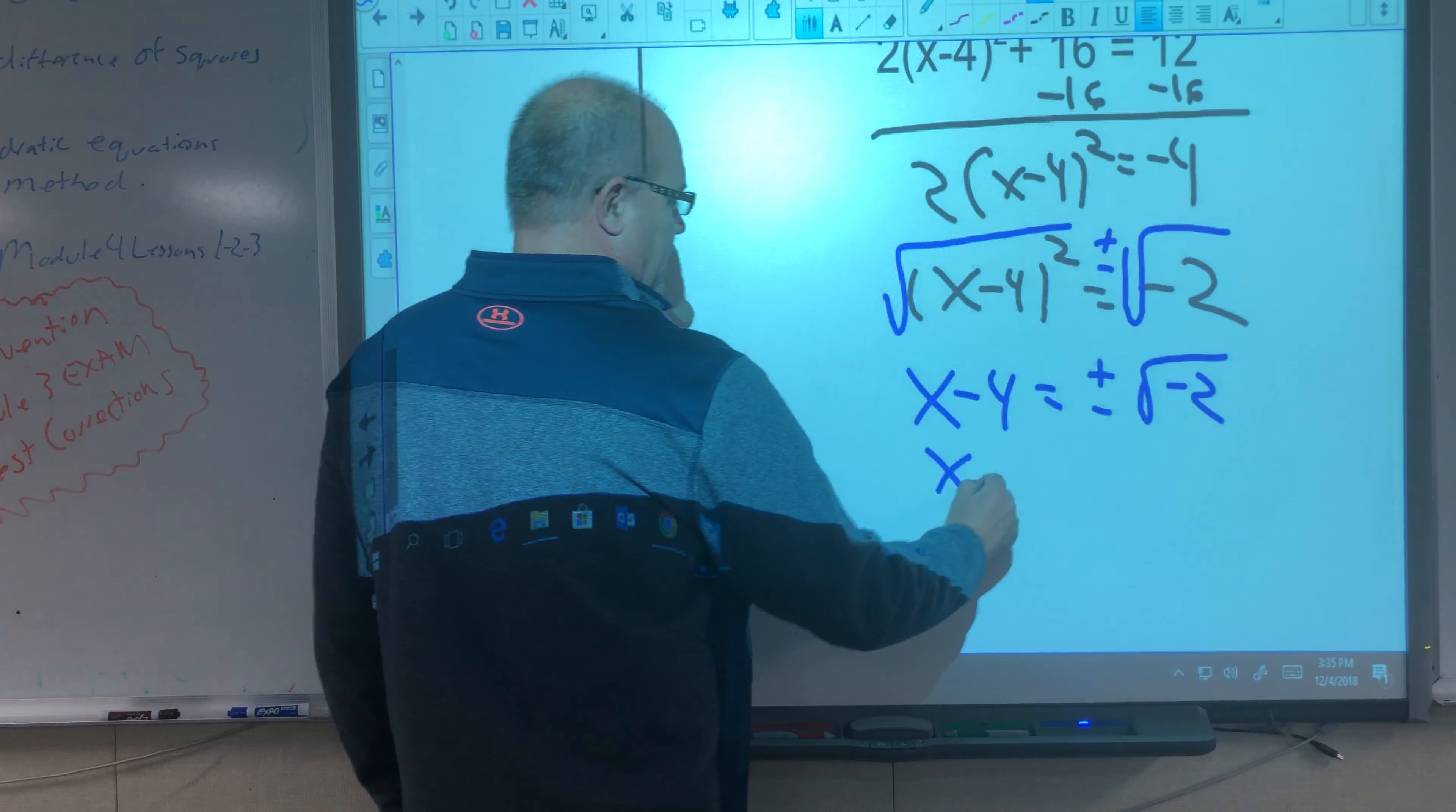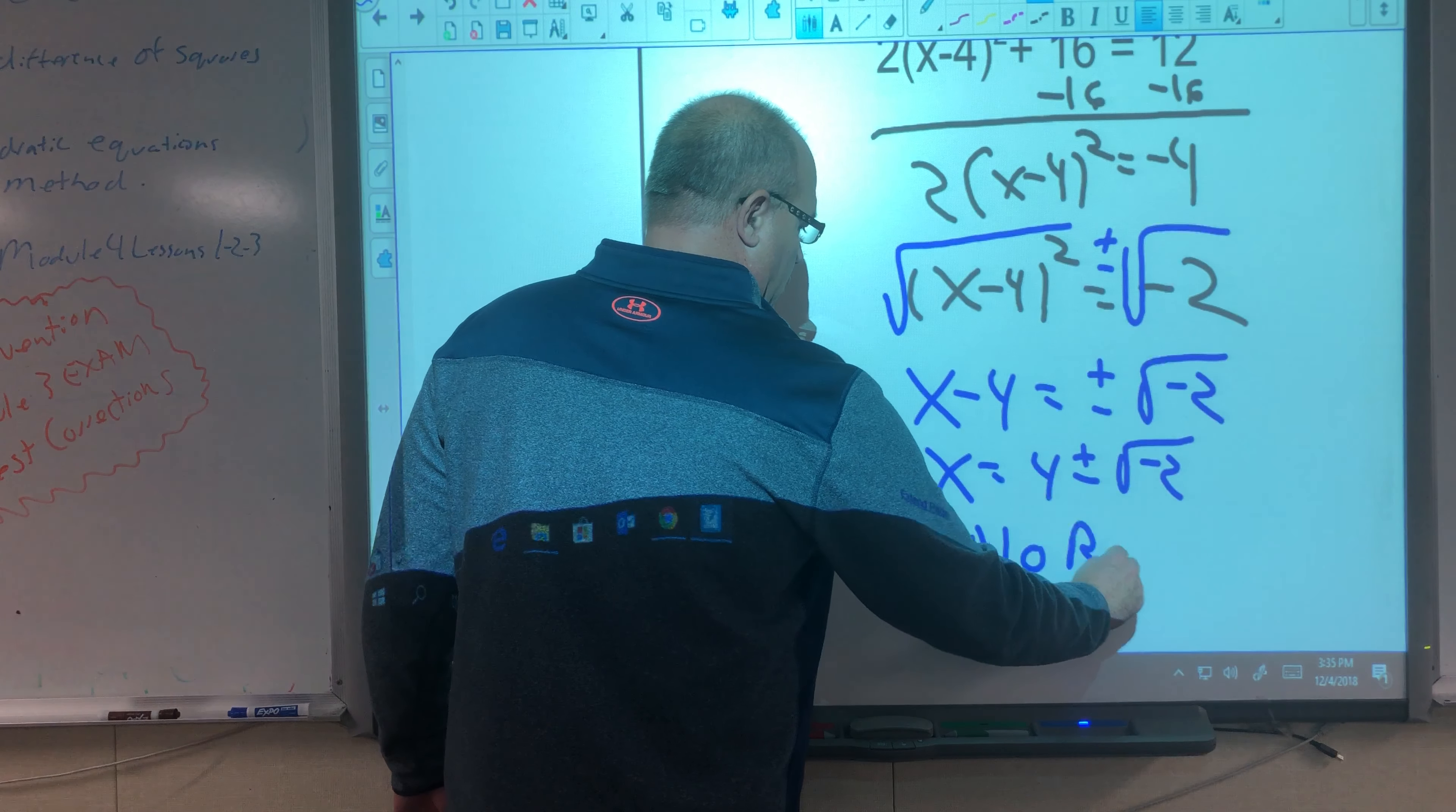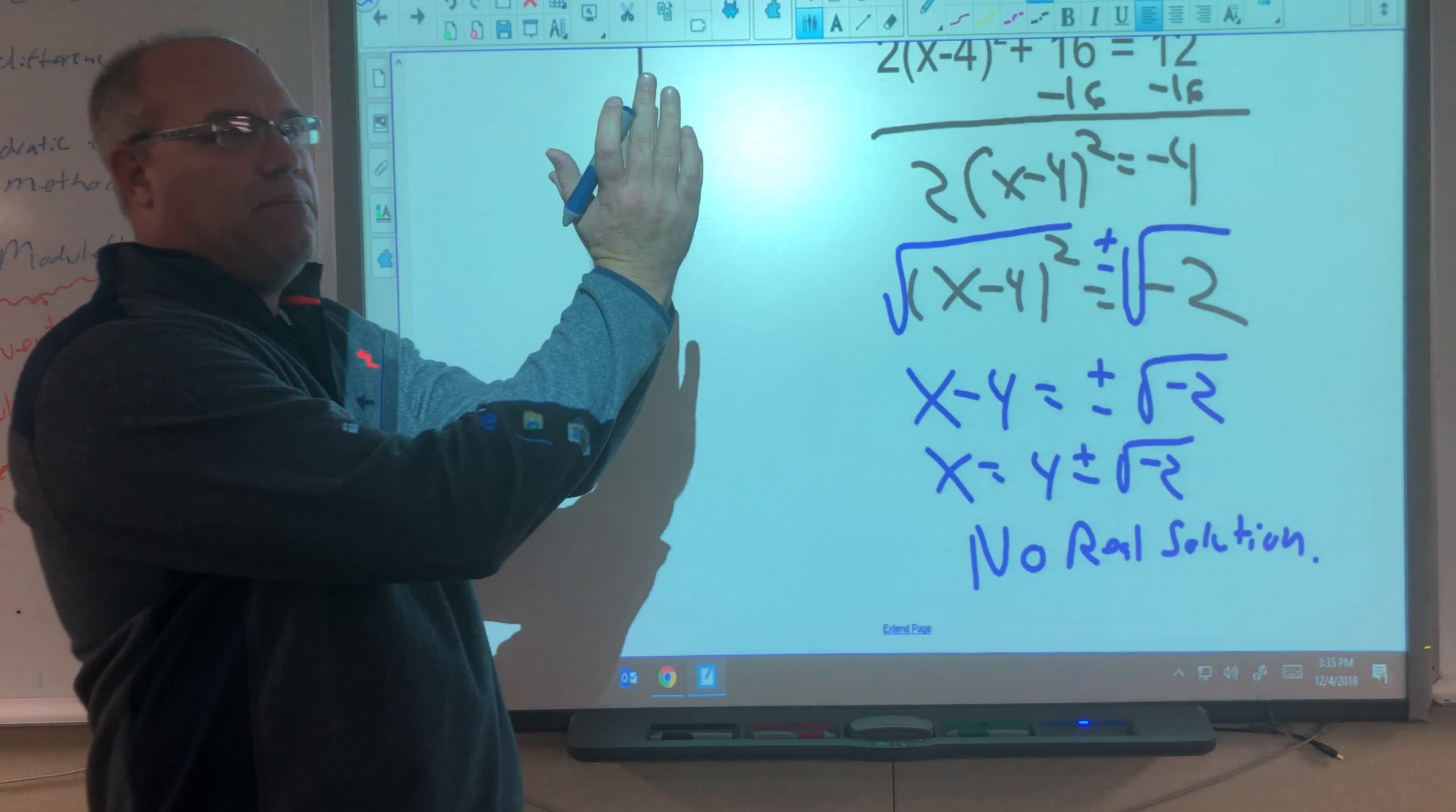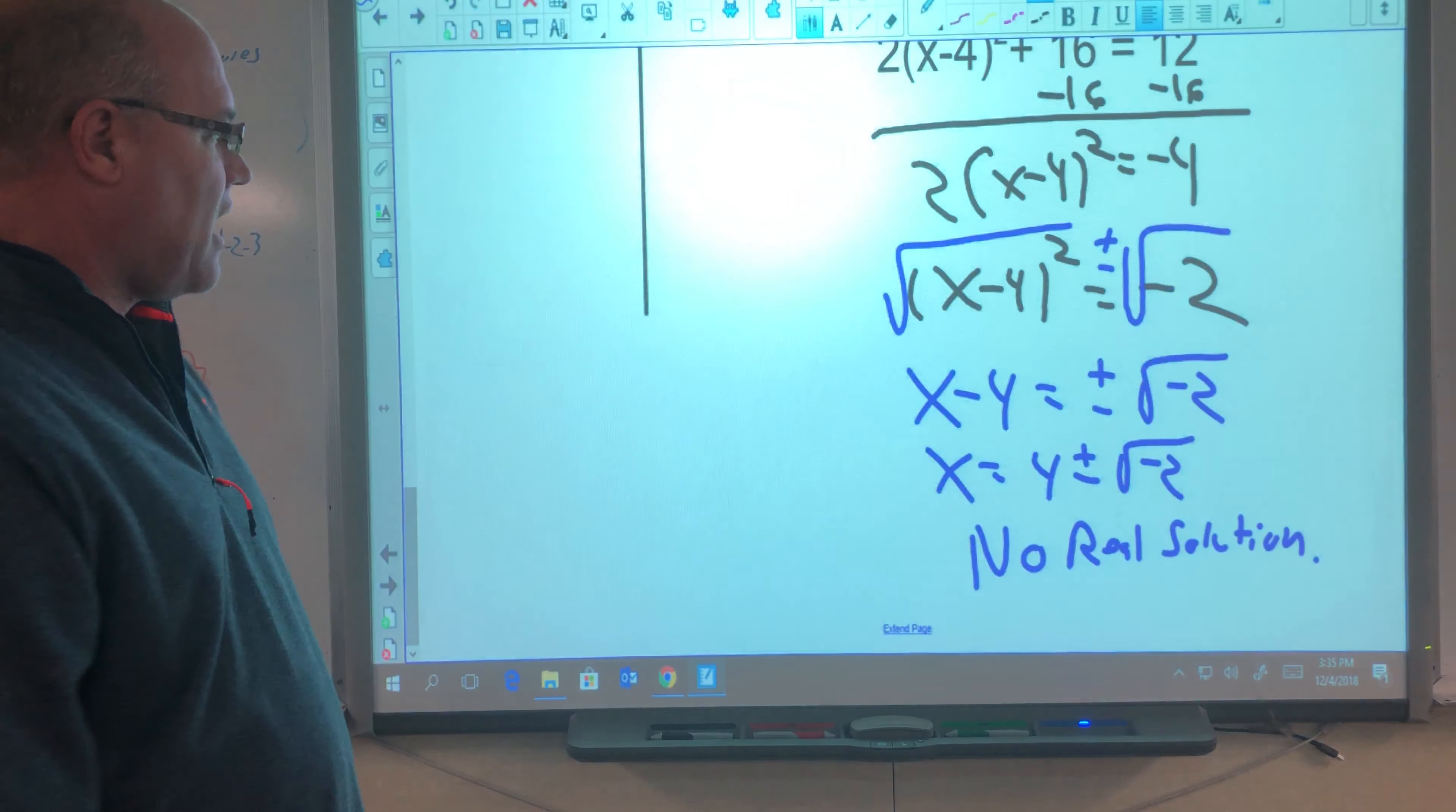So our answer would be x equals 4 plus or minus the square root of negative 2. If we finished it off, we'd say that is no real solution. What do you know about the graph of the parabola? The graph of this would be a parabola that either opens up and the vertex is above the x-axis, or a parabola opened down and the vertex is below the x-axis. It doesn't cross the x-axis.